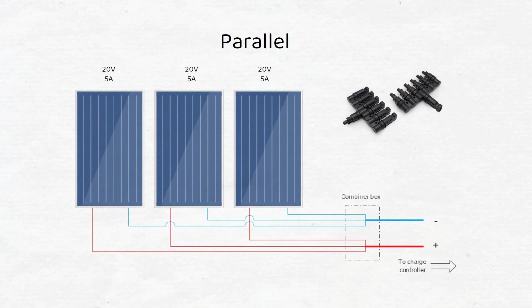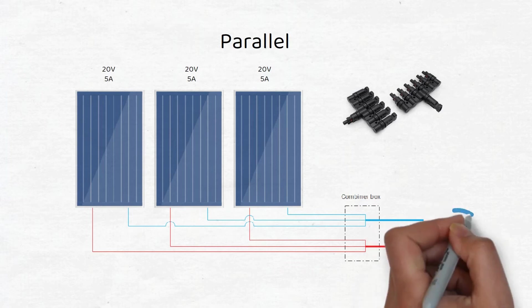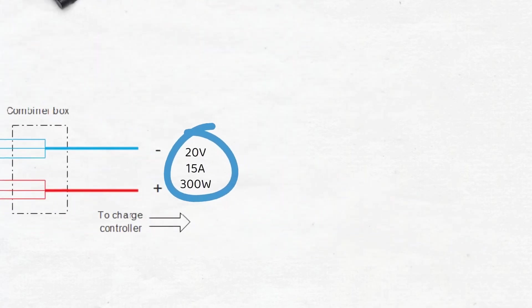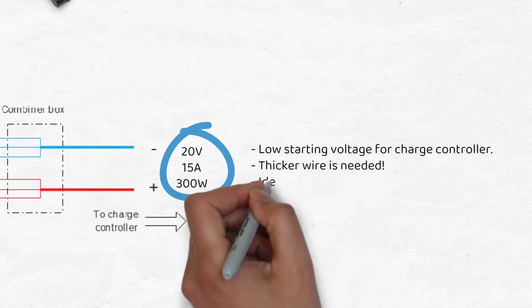If we use the same panel at 20 volts and 5 amps each, we get an output to the charge controller at 20 volts and 15 amps. If you wire in parallel, you need a charge controller that is able to handle the larger input current, which will be more expensive.